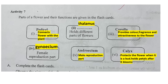Activity holds different parts of the flowers. Corolla provides color, fragrance and attractiveness to the flower. The gynoecium is the female reproduction part. The androecium is the male reproduction part. Calyx protects the flower when it is a bud and holds petals after it blooms.